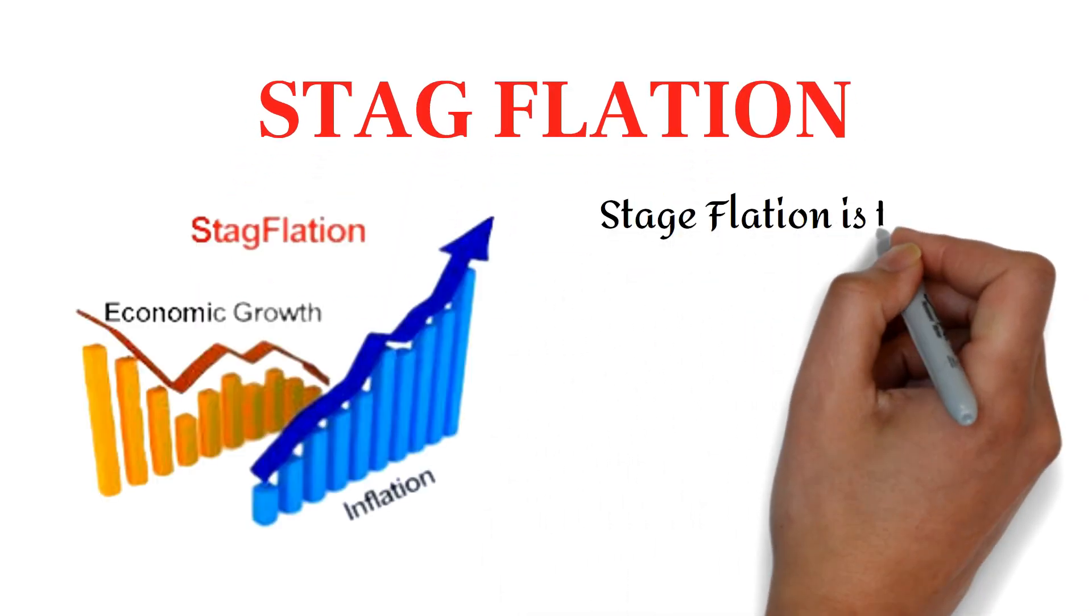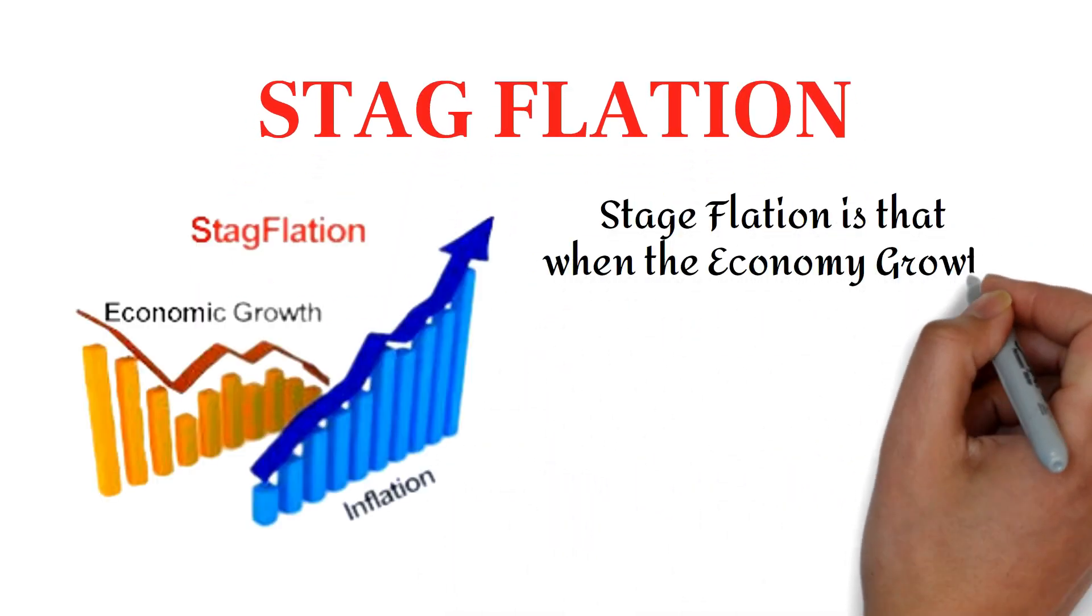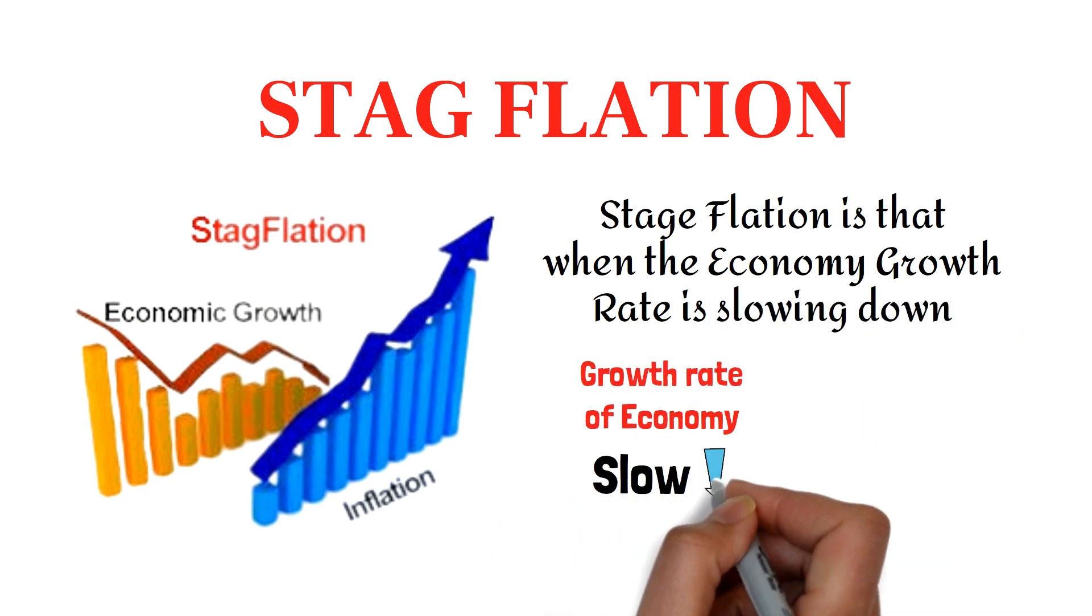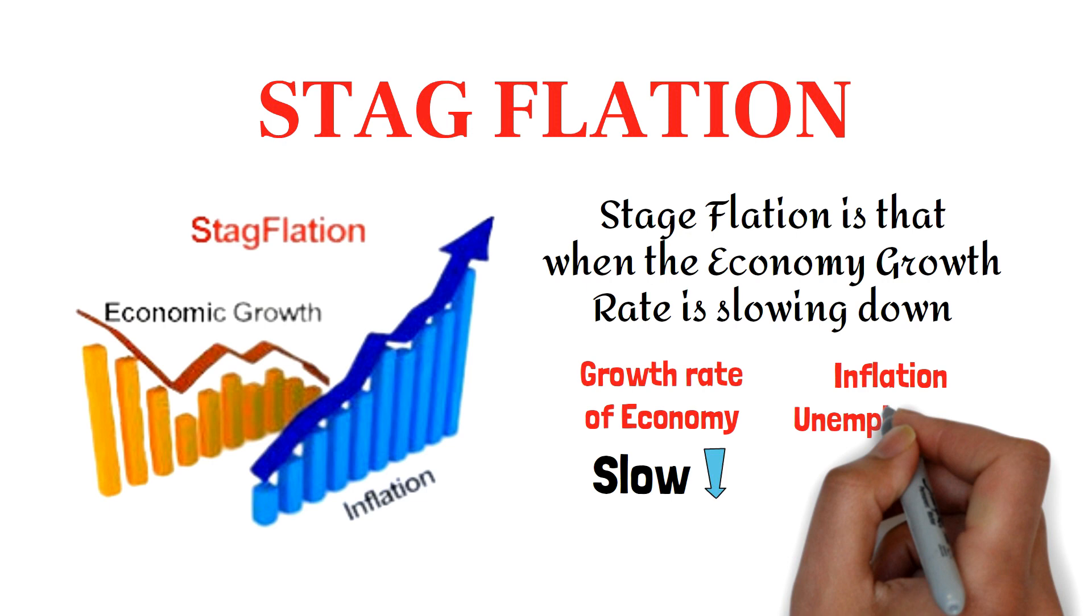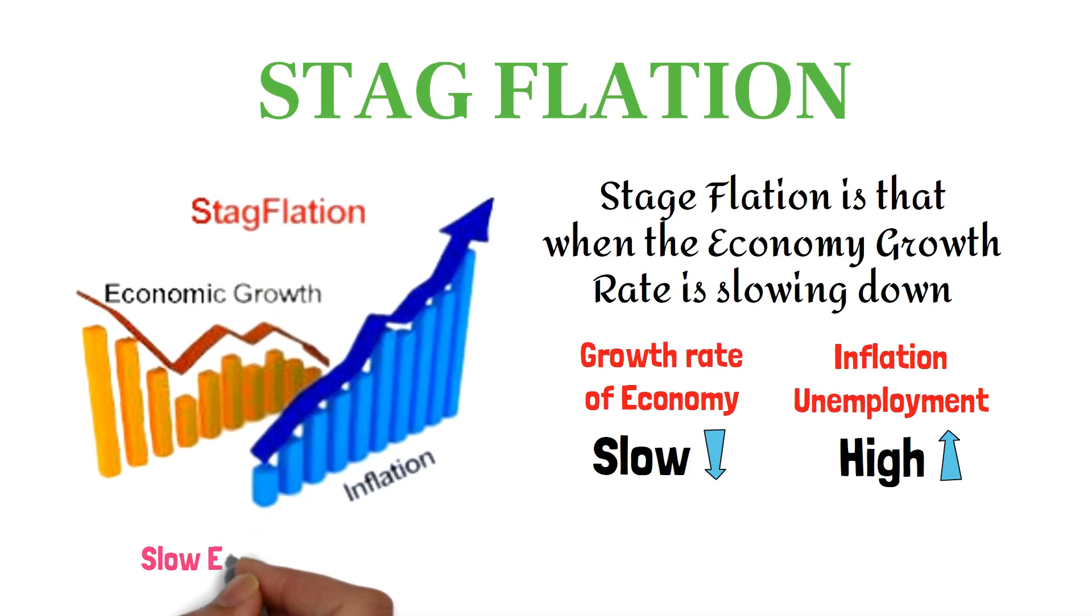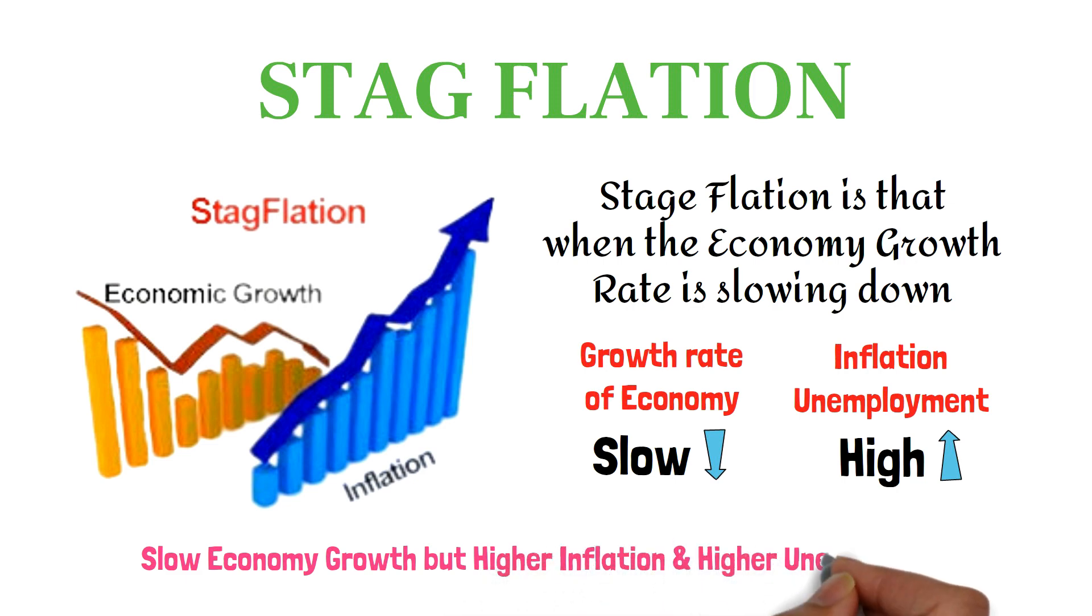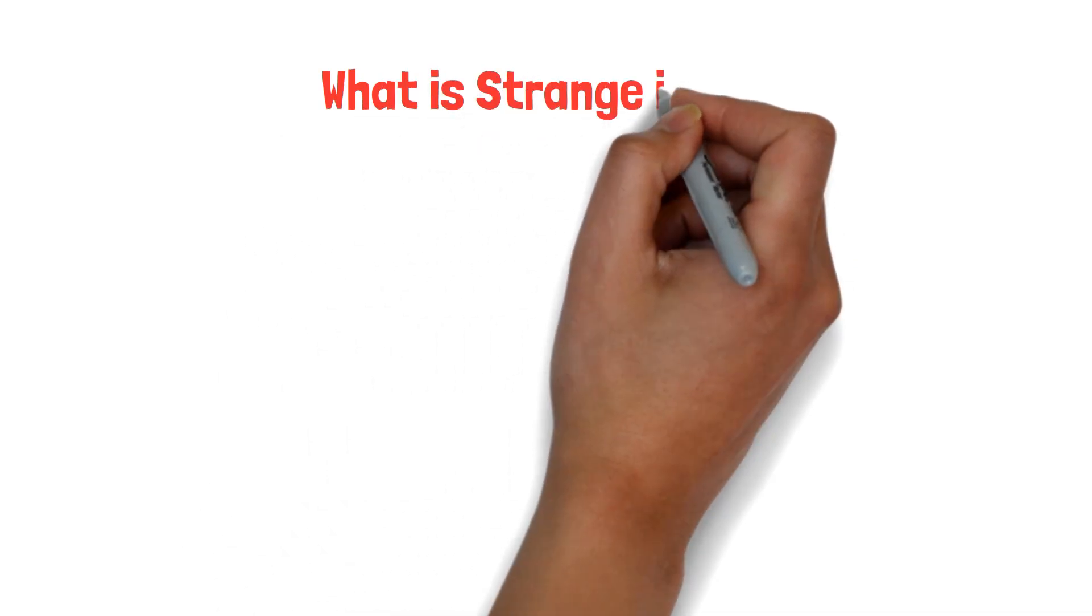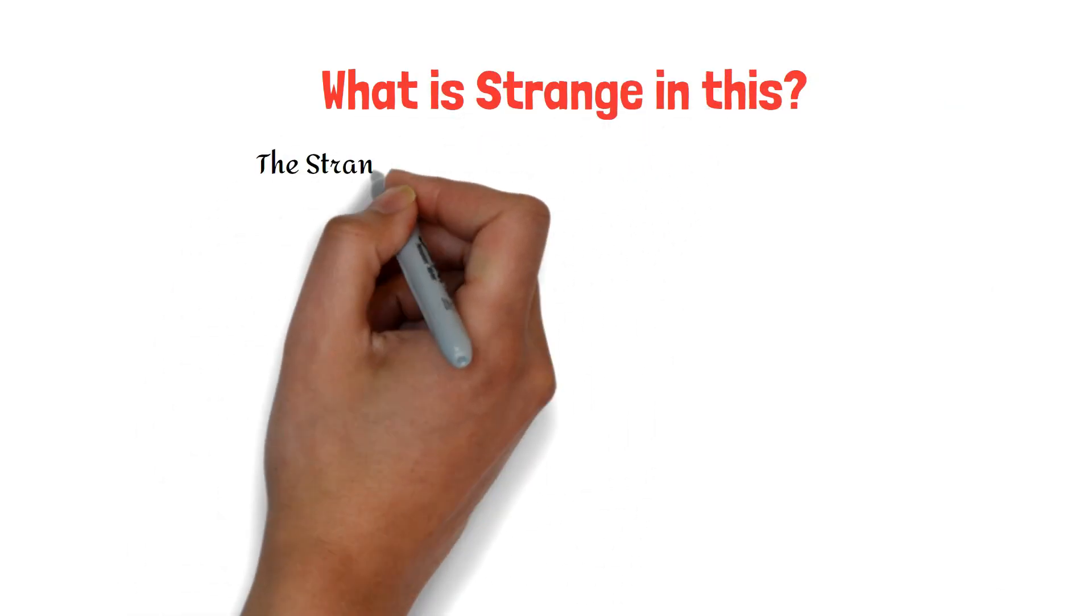What do you understand by stagflation? Stagflation is when the economy's growth rate is slowing down—that is, the growth rate of the economy is slow—but inflation and unemployment are high. The relationship between these three factors is known as stagflation. Remember it: low economic growth but high inflation and high unemployment. Now what is strange in this?